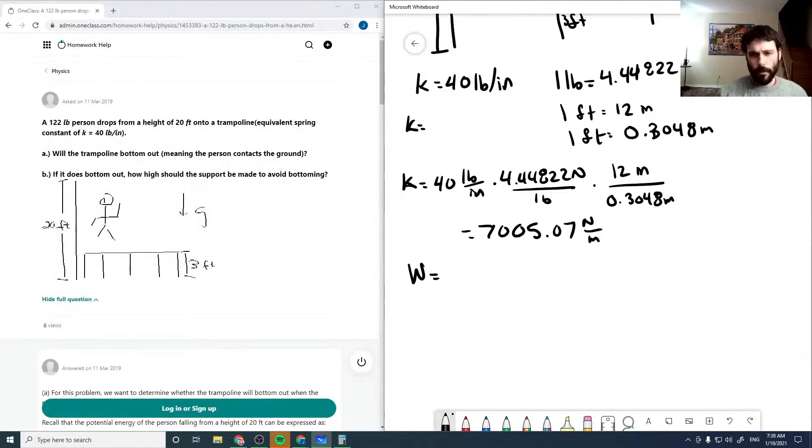Our weight is just mg, which is 122 pounds, which we need to multiply by our newton per pound conversion. So we get 542.683 newtons.